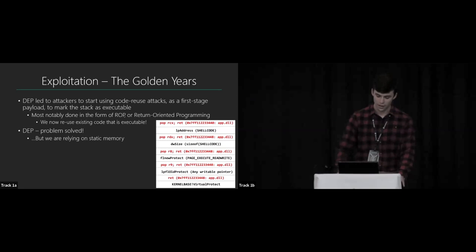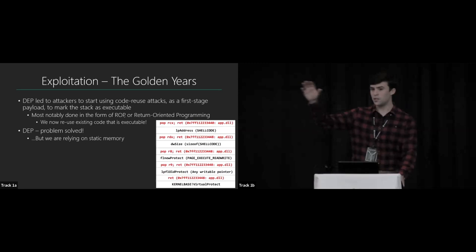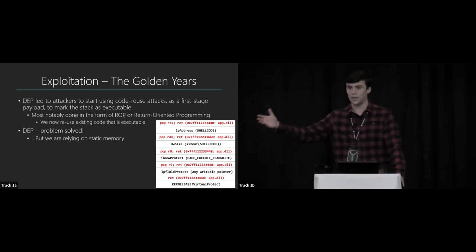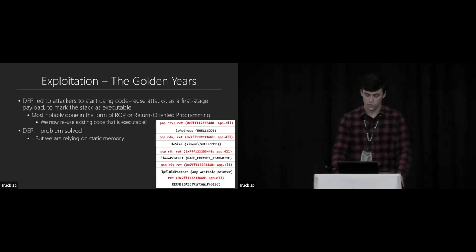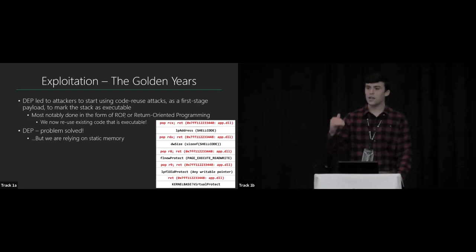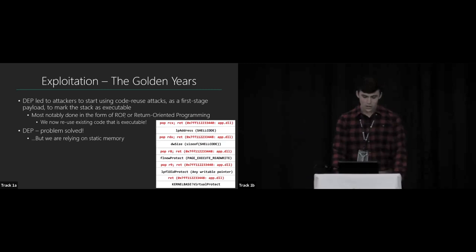Each time we execute a ROP gadget, it ends in a return and goes to the stack, picks up whatever's there, and executes it. What's on the stack next? The next ROP gadget. By nature, each ROP gadget chains execution into the previous one. This allows us to call Windows API functions — like VirtualProtect — to change the permissions of memory. So we can use a first-stage payload to mark the stack as executable and then go about exploitation the old way.